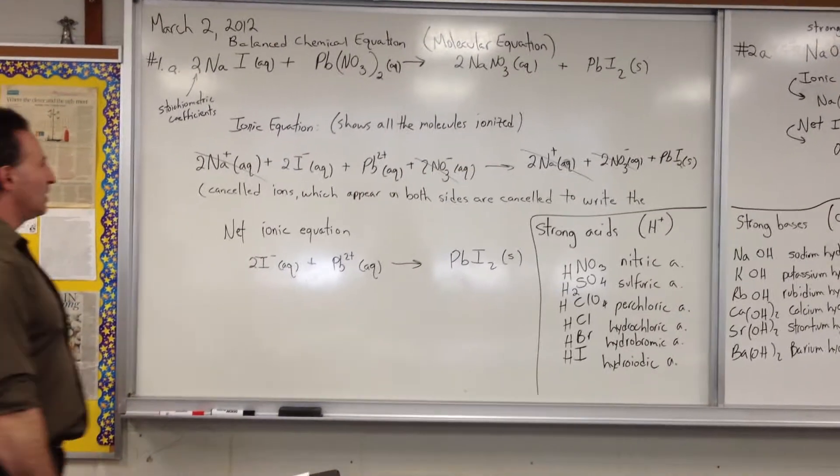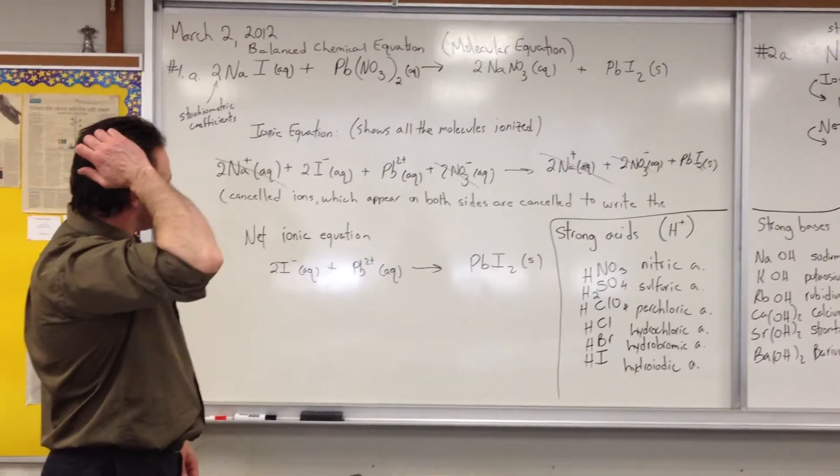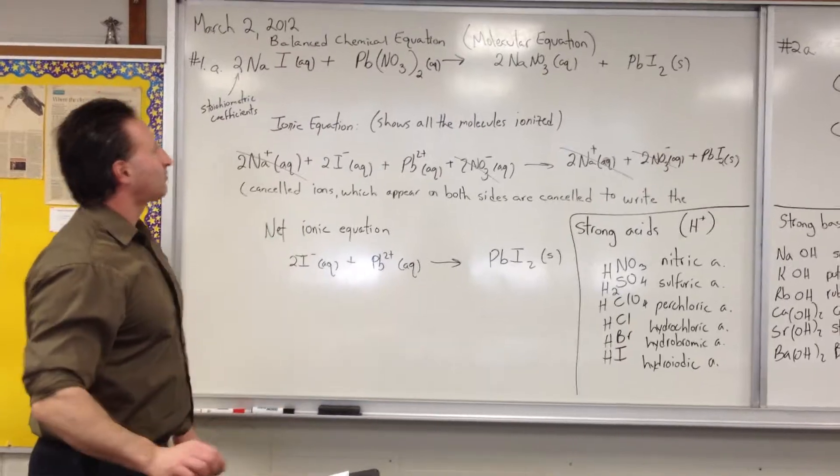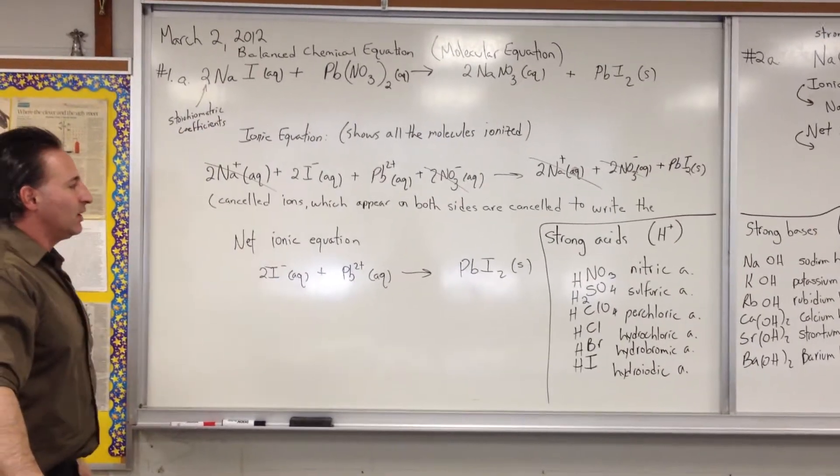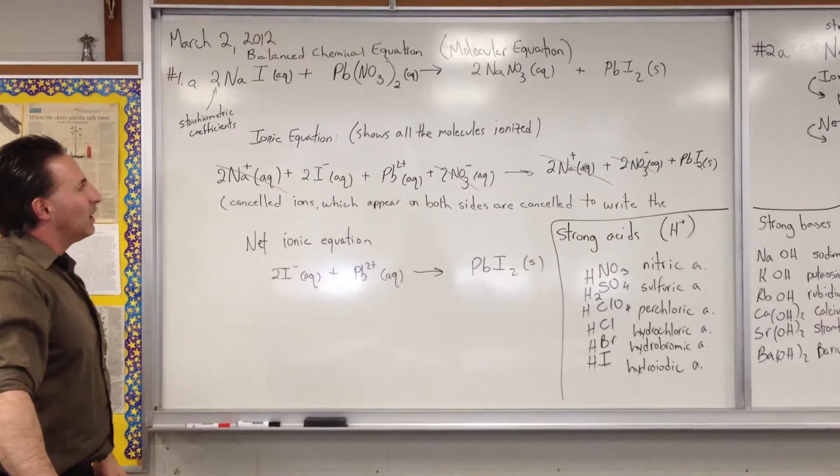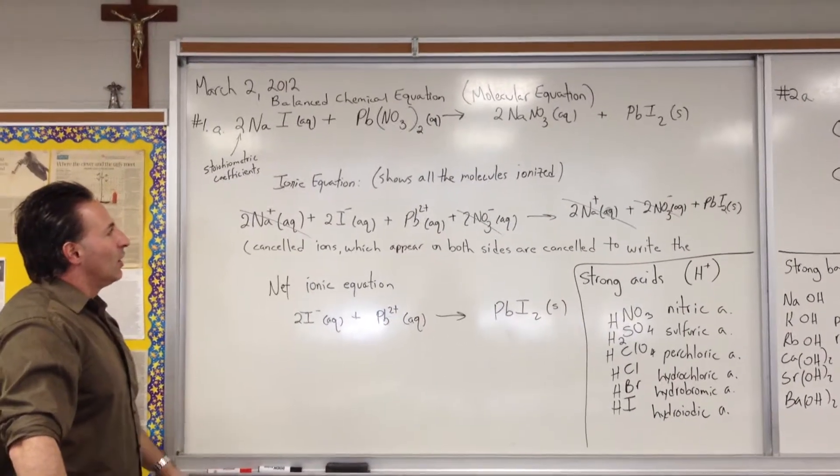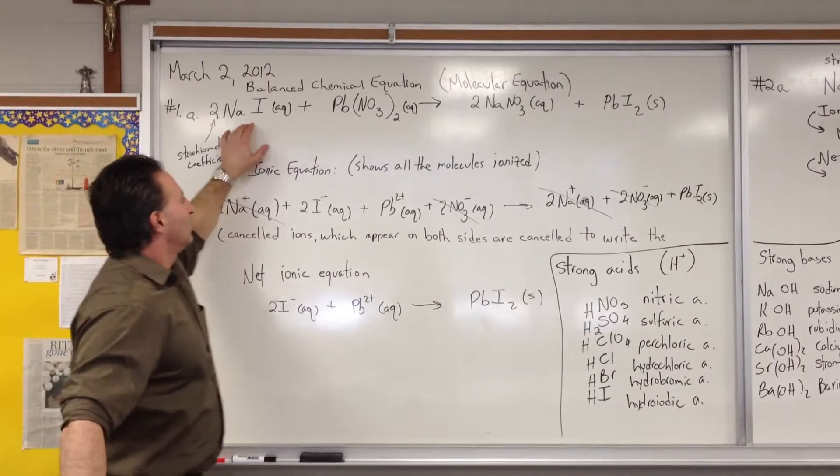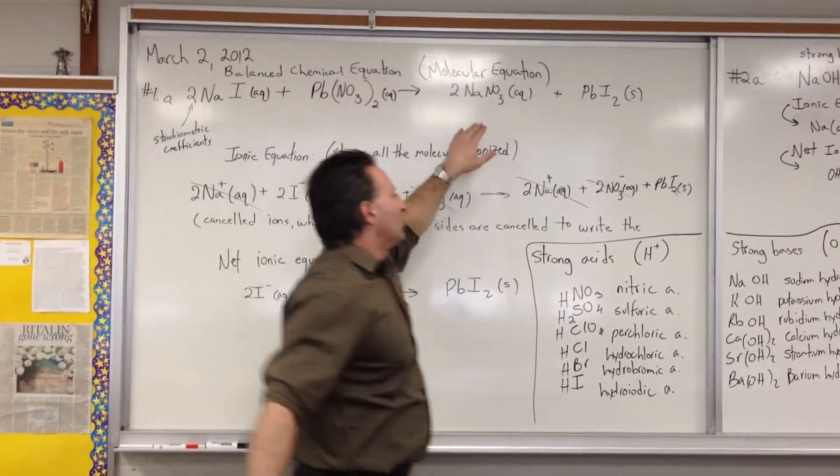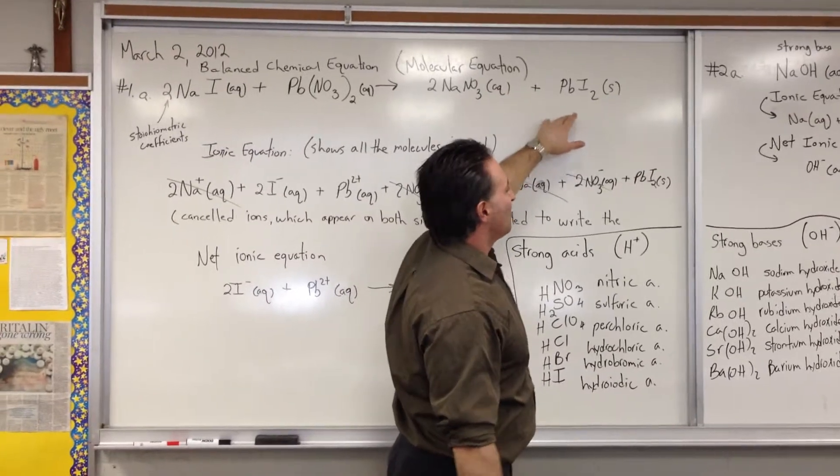Alright, so today's class we're going to discuss how to write chemical equations. There are three types of chemical equations you can write. The first type is the balanced chemical equation, also known as the molecular equation, where you show how two different chemicals are reacting to produce two other substances.